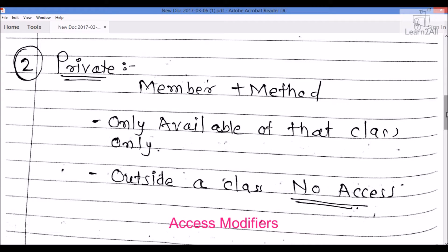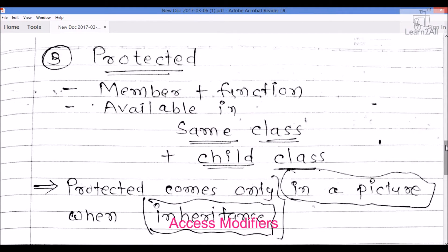Protected members or protected functions can be accessed from that particular class as well as its child class. Protected comes into play only when inheritance is involved.